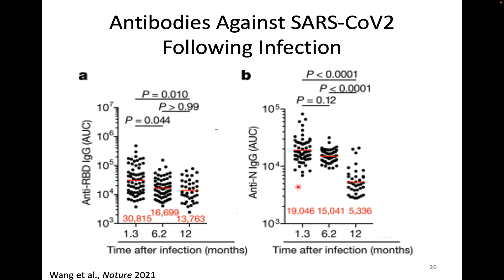Contraction is also a phenomenon I talk about quite frequently when explaining aspects of COVID-19 immunology. You can see data here looking at antibody levels against SARS-CoV-2 following infection at 1.3 months, 6.2 months, and 12 months. We can look at levels of antibodies against two different antigens of this virus, and you can see the antibody numbers going down — we can see this contraction phase very obviously when looking at these data.